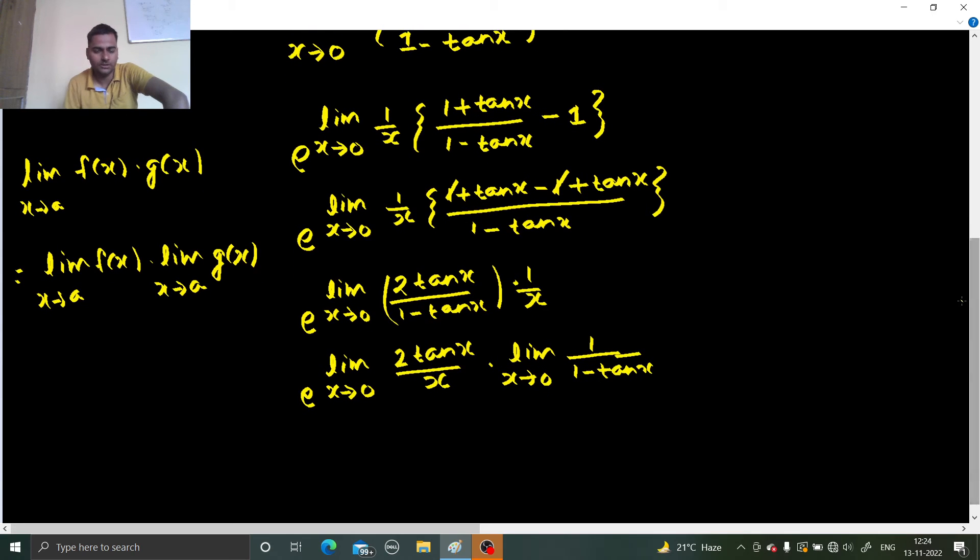This is good. Tan x by x at x tending to 0 will give you 1, we know that limit x tending to 0, tan x by x is 1. So this is 1, this 2 can be taken out. So you are getting e power 2 and if you put 0 here, so 1 upon 1 minus 0, so 1 upon 1, so this will give you 1. So e power 2 is what you are getting.